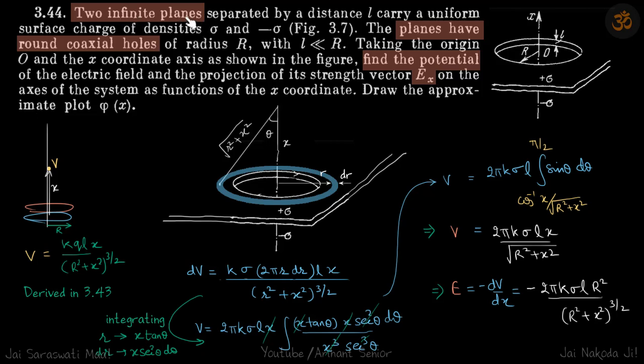We have two infinite planes with holes cut into both of them. One has charge density +σ and the other has -σ. We need to find the potential and the electric field at a distance x from the center.